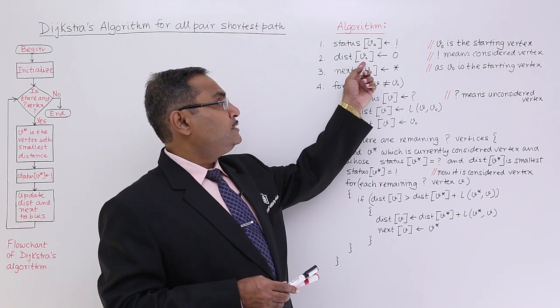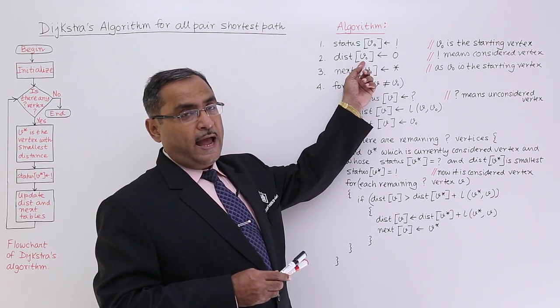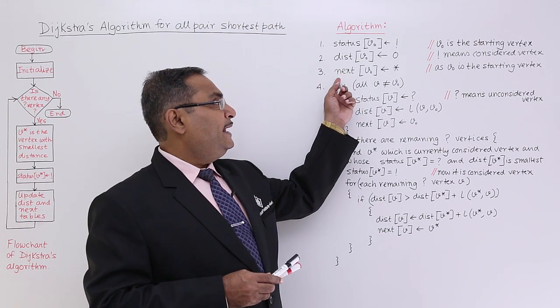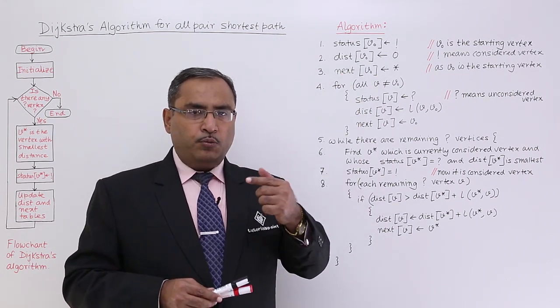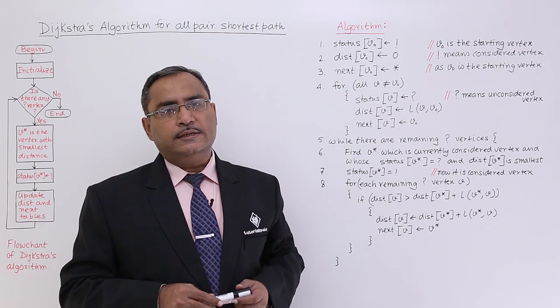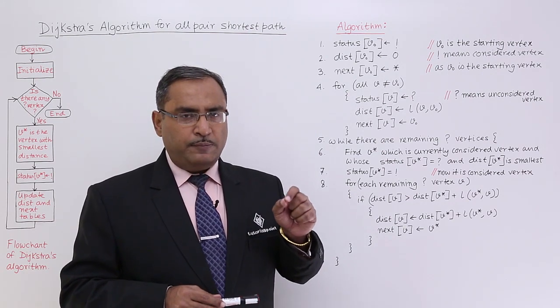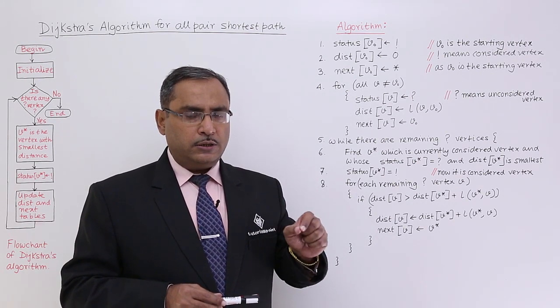That is our dist, the corresponding one-dimensional array. Next is denoting from which node currently the distance has been measured. So the respective node address or the node number will be put there.